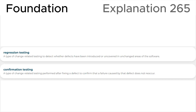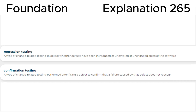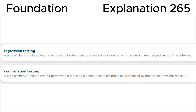Let's look at the ISTQB glossary. Regression testing is defined as a type of change-related testing to detect whether defects have been introduced or uncovered in unchanged areas of the software. Confirmation testing is a type of change-related testing performed after fixing a defect to confirm that a failure caused by that defect does not reoccur.